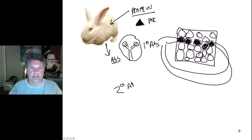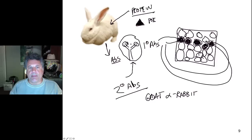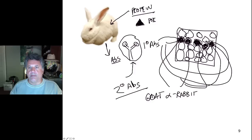How do we tell that those primary antibodies are bound there? We use secondary antibodies that are directed against primary antibodies. If the primary antibody was made in a rabbit, we can have secondary antibodies made in a goat - goat anti-rabbit antibodies. These goat anti-rabbit antibodies will bind any rabbit antibodies. Since the primary antibodies are rabbit and they bind to these cells, a secondary antibody that is goat anti-rabbit will bind to those primary antibodies in those cells.